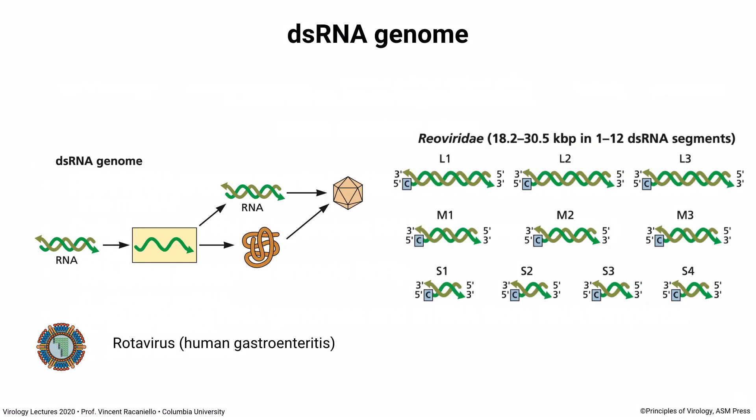Double-stranded RNA viruses: the double-stranded RNA genome cannot be translated. Even though it has a plus mRNA strand in it, it has to be copied into mRNA which can then be translated or replicated. An example is rotavirus, a cause of human gastroenteritis. These viruses have segmented genomes — anywhere from 1 to 12 segments depending on the type of reovirus — and all are packaged into the virus particle. You need all of them to initiate an infection.